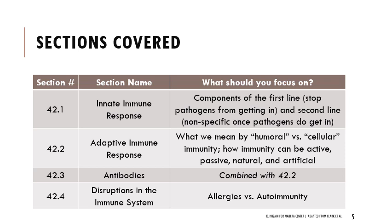We're going to start by talking about innate immunity and then get into adaptive immunity, which involves antibodies. We'll briefly cover examples of disruptions in the immune system. For innate immunity, focus on the first line of defense that stops pathogens from getting in, and the second line of defense — non-specific ways we deal with pathogens that do get in. For adaptive immunity, compare and contrast humoral and cellular immunity, general features of antibodies versus antigens, and the ideas of allergies versus autoimmunity.